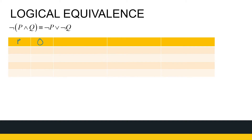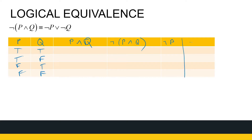Let's look at the truth table for P and Q. We do this systematically — don't skip columns. For P∧Q: true, false, false, false — only true when both P and Q are true. So ¬(P∧Q) is: false, true, true, true. That's the left-hand side.